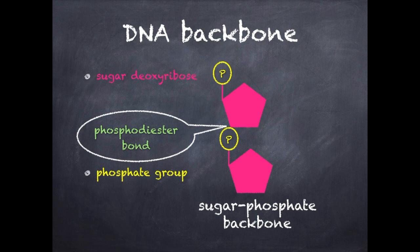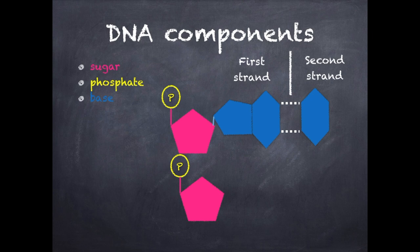You might be wondering, if the sugar and phosphate are always the same, then where is the genetic information stored? The answer is, when the nitrogenous base is attached to each sugar, it creates a sequence along the chain, which encodes the genes.